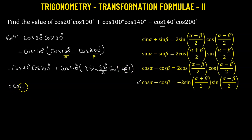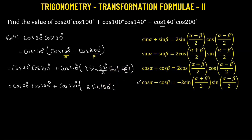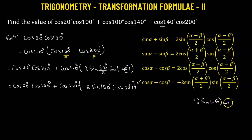So we now have cosine 20° times cosine 100°, plus cosine 140° multiplied by negative 2 times sine of 150°, times sine of negative 50°. Since sine is an odd function, sine of negative 50° equals negative sine 50°.